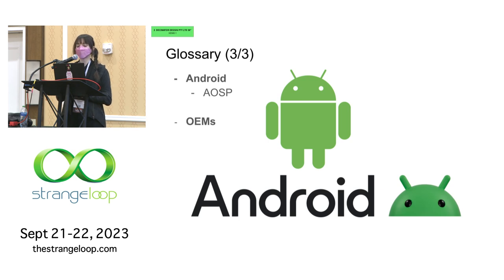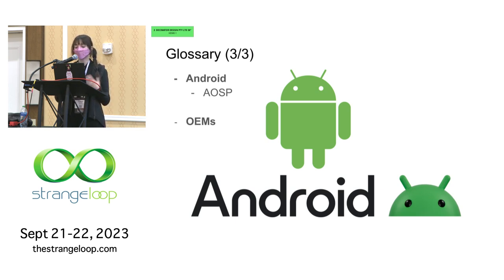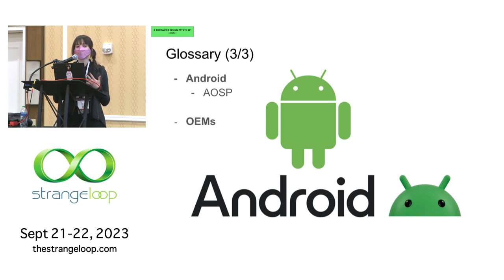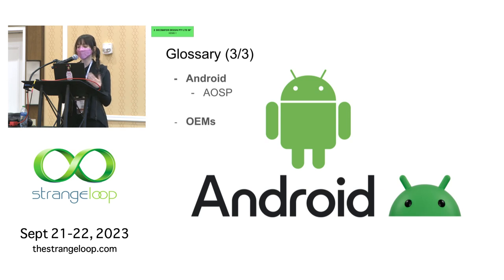Android is an open source operating system meant to run not just on phones but many other types of devices, primarily phones. The open source release is referred to as AOSP, short for the Android Open Source Project. Links to all the code I'm covering today will be provided. Android is the most widely used mobile operating system in the world, with about 70% of mobile phones using it. Many organizations customize Android, modify it, put it on hardware they manufacture themselves, and sell it — we refer to these as OEMs, or Original Equipment Manufacturers.